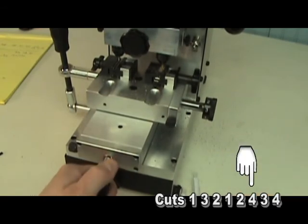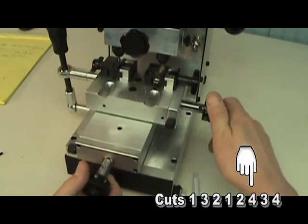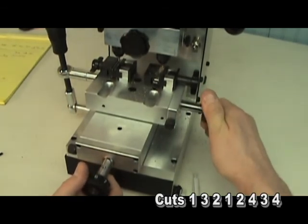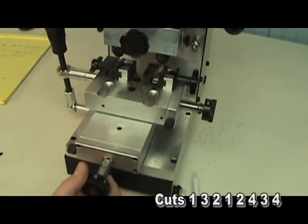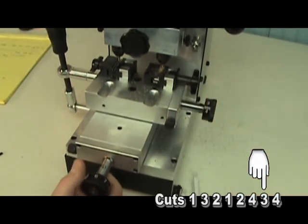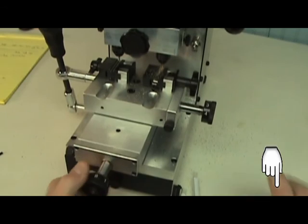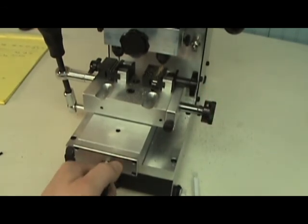Again, our next depth is deeper, so we'll turn our space rod to the number five position, then turn our depth rod to a number four depth. Our next depth is shallower, a number three, so we'll turn our depth rod first to a number three, then turn to our seventh space position. Our last cut is deeper, so we'll turn our space rod to the number 8 position, then turn a number 4 depth.